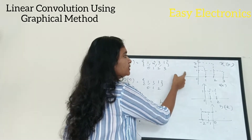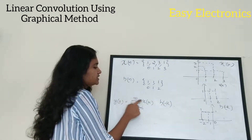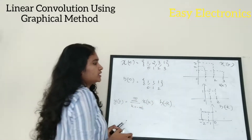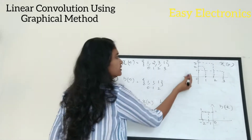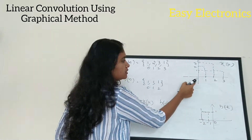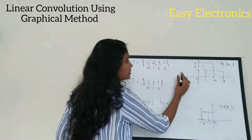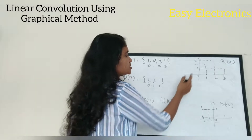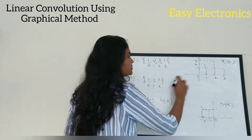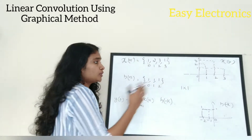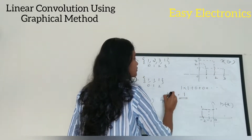Now take the product of the common terms in x of k and h of minus k, because the equation is sigma x of k into h of minus k. The only common point is 0. The value of x of k at 0 is 1, and for h of minus k at 0 the value is also 1. So 1 into 1 equals 1. All other products are zero since there are no other common points. So y of 0 equals 1.